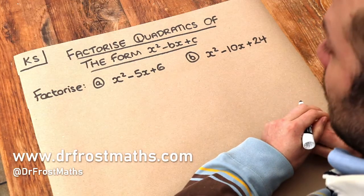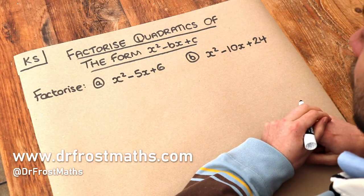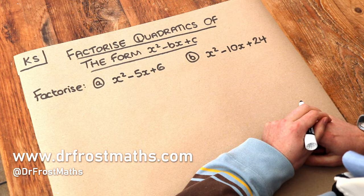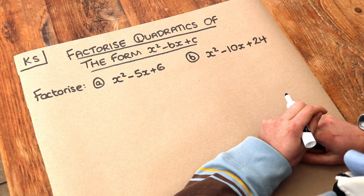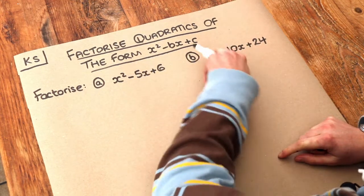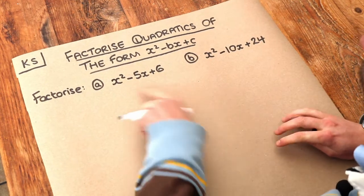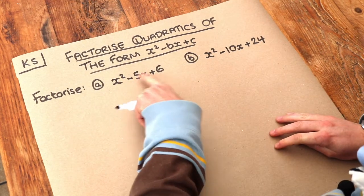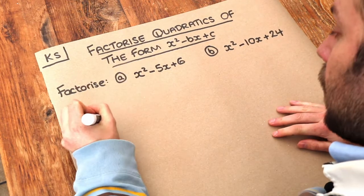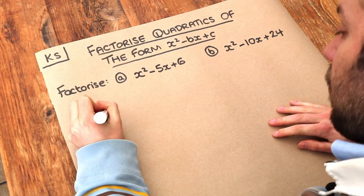Hello and welcome to this Dr. Rosamath's key skill video on factorising quadratics of the form x squared minus bx plus c. In the previous video we saw how to factorise quadratics like these, but where we had only positive symbols, only plus signs. So let's view an example of that.